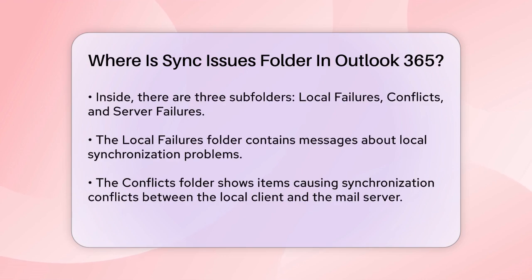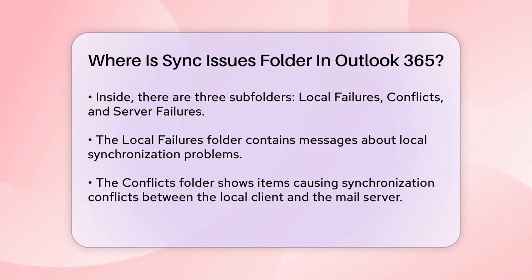Inside the Sync Issues folder, you'll find three subfolders: Local Failures, Conflicts, and Server Failures. Each of these subfolders contains specific types of error messages related to synchronization issues. For example, the Conflicts folder will show you items that are causing synchronization conflicts between your local Outlook client and the mail server.